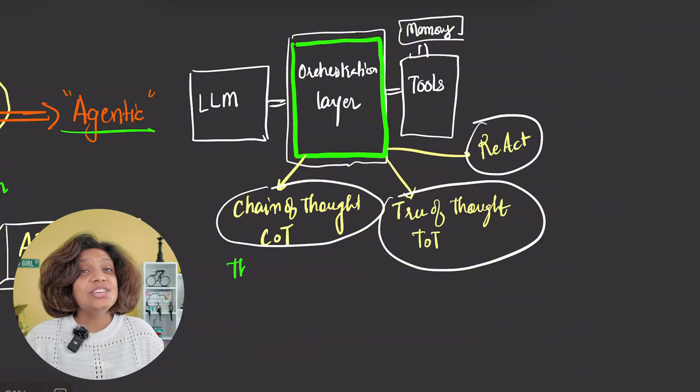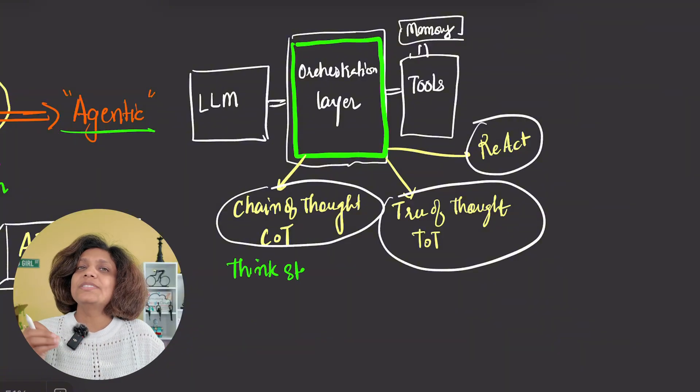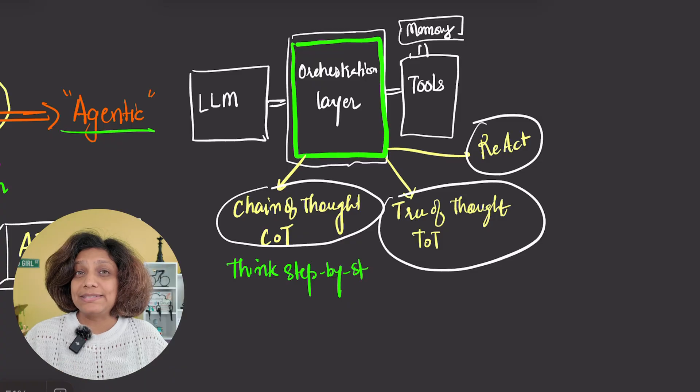You've probably heard of some of these. Chain of thought, or COT. This prompts the model to think step-by-step, breaking complex problems into a linear sequence of simpler thoughts.